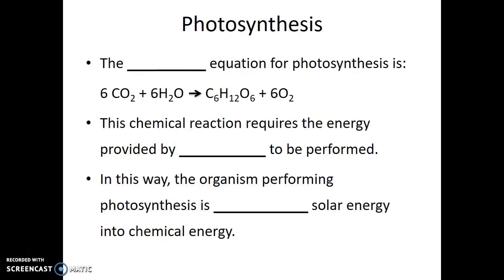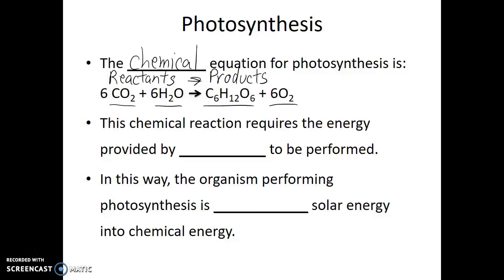The chemical equation for photosynthesis has reactants — carbon dioxide and water — being converted into products which are glucose and oxygen gas. This chemical reaction requires the energy provided by sunlight to be performed. In this way, the organism performing photosynthesis is converting solar energy into chemical energy.